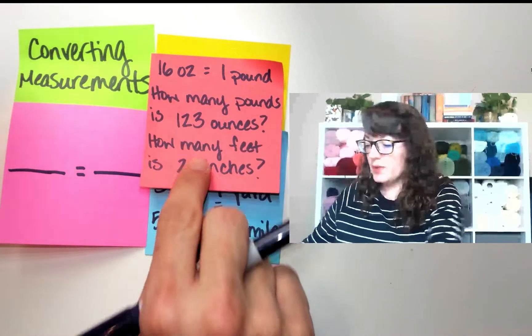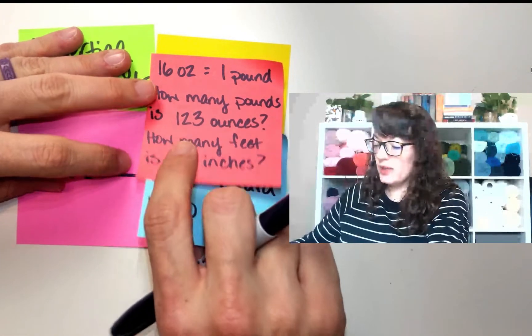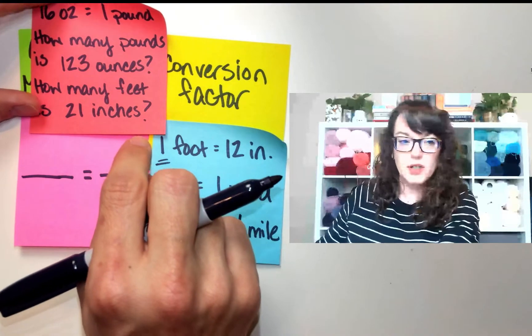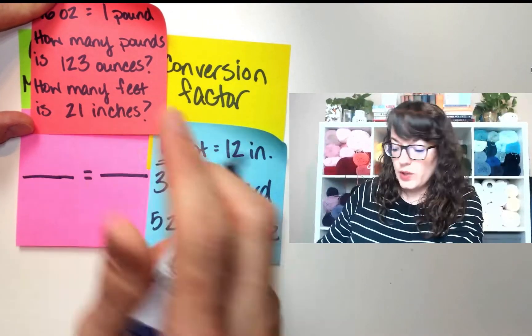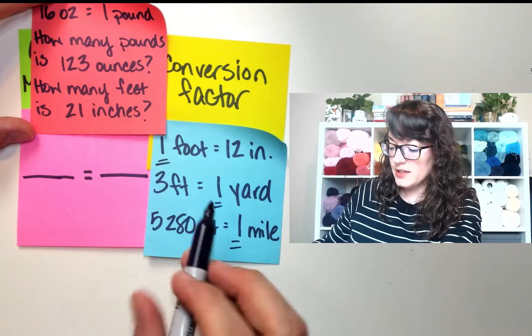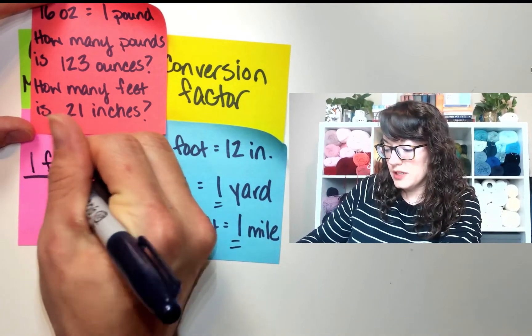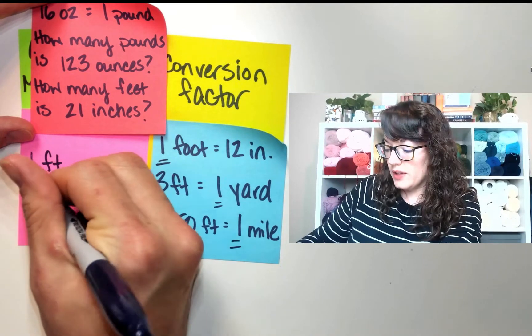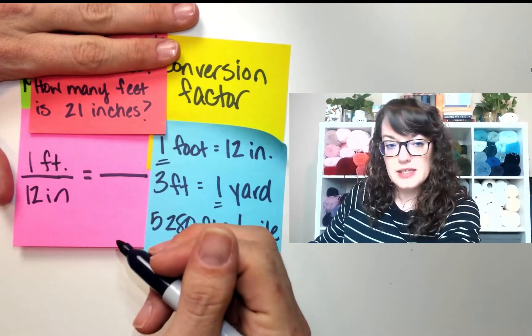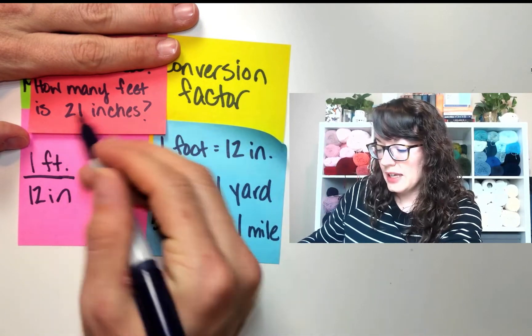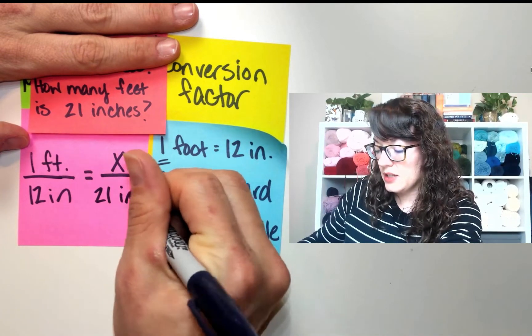And then for this one, how many feet is 21 inches? Again, that is how long I was when I was born. So how many feet is 21 inches? How many feet? Oh look, I need to find this. So I know that one foot is 12 inches. So how many feet? I don't know. Feet is 21 inches.